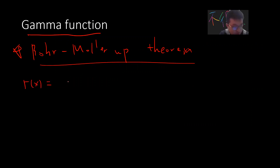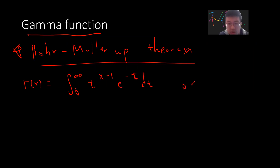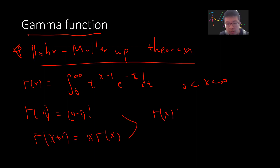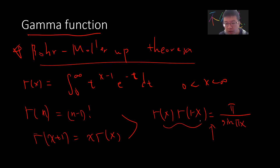Quick definition: gamma of x is defined by the integral, for x greater than zero up to infinity. There is a simple exercise for you to check whether gamma(n) is just (n−1) factorial, and it's easy to prove that gamma(x+1) equals x·gamma(x). There is also a duplication formula, which is proved using complex analysis — you can see my other videos.